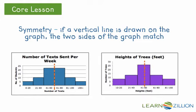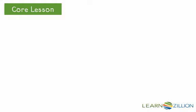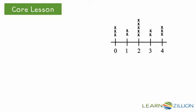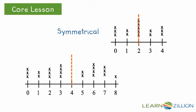And the same with this other histogram. On this dot plot, if we put a vertical line through the two, then we could say this is symmetrical. If we put a vertical line on the four, then we would say this is not symmetrical.